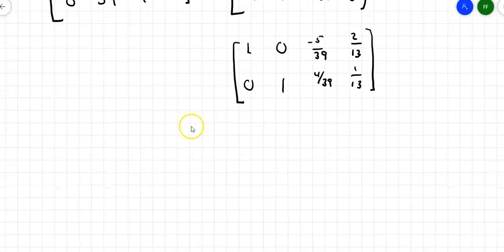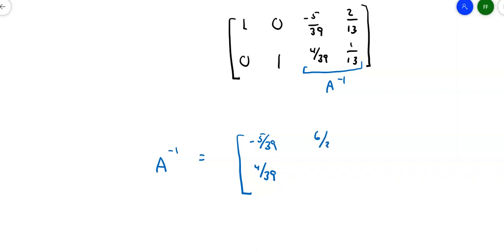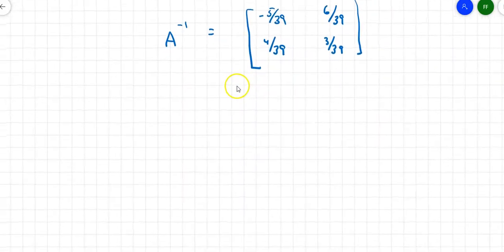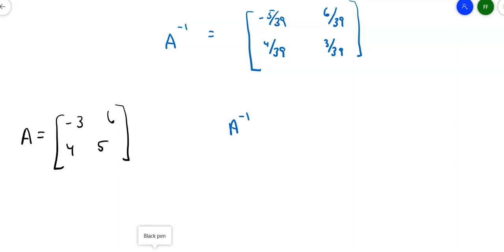Isn't that interesting? This side over here is A inverse. Let's write A inverse with a common denominator of 39: negative 5/39, 4/39, 6/39, and 3/39. Pull out that 1/39. The original matrix A was negative 3, 6, 4, 5, and A inverse is 1/39 times negative 5, 6, 4, 3. They're almost the same numbers but not quite, and they're in a different order.